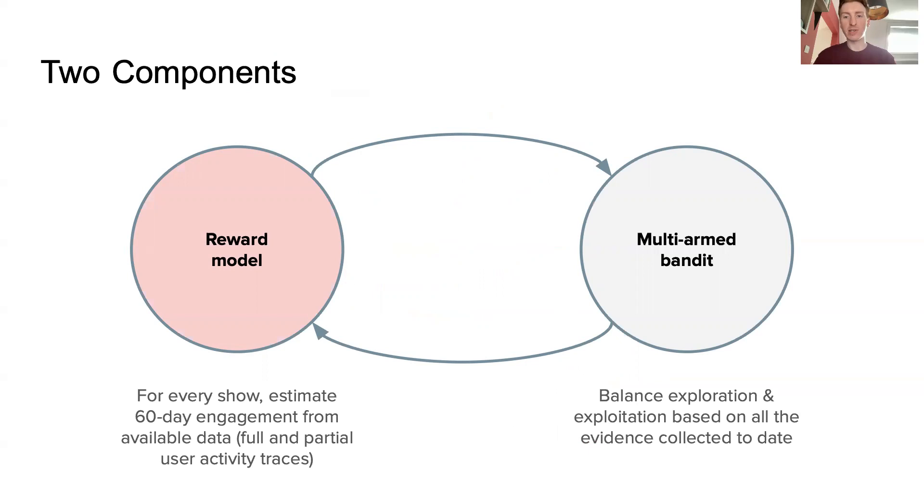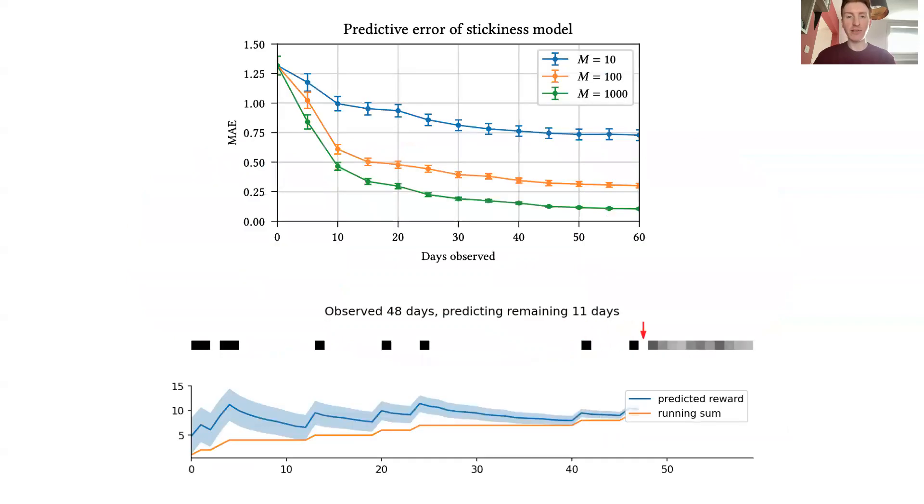Crucially, our method allows us to condition not only on full 60-day user activity traces, but also on incomplete traces. We see from the top plot that our stickiness estimates become increasingly accurate as we receive more data, be that by time passing or by consuming more user traces, denoted by the letter M.